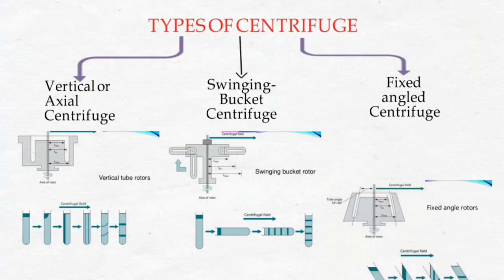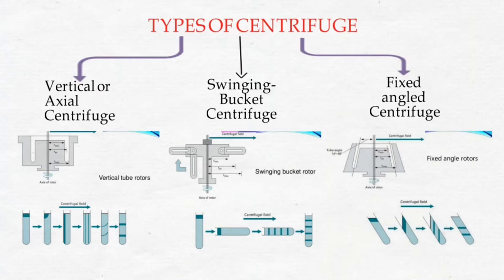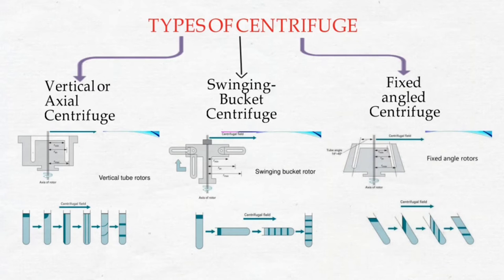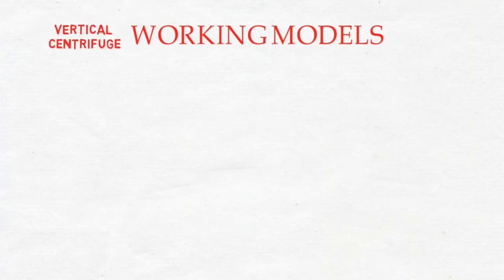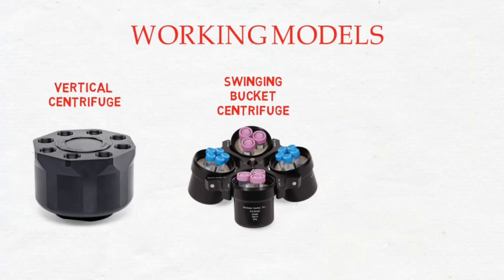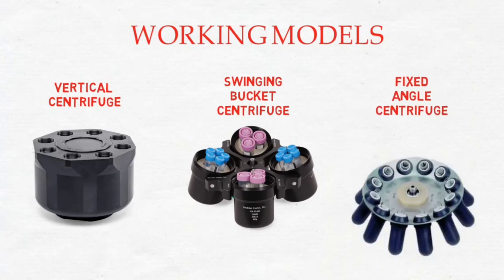In a fixed angle centrifuge, tubes are positioned rigidly at a fixed angle of 25 to 40 degrees from the vertical axis. Particles also travel a shorter distance, resulting in a shorter run time, making it the most widely used centrifuge type. Due to very low air friction, this type can attain much higher speeds — up to 1 lakh RPM. Here are the working models of each type: vertical, swinging bucket, and fixed angle centrifuge.